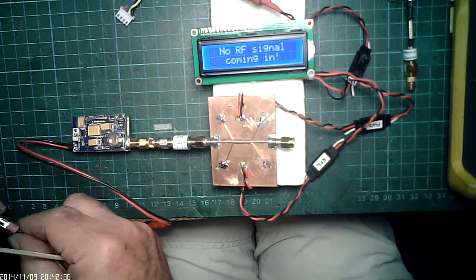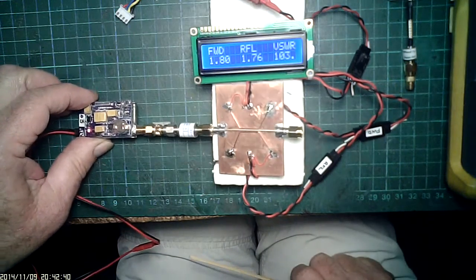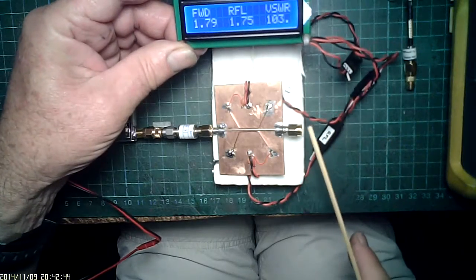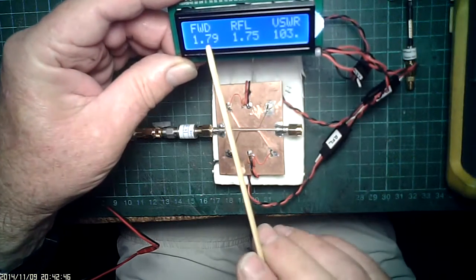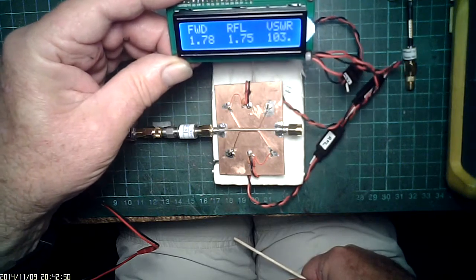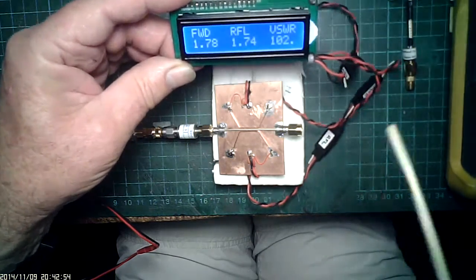Plug in the VTX. Yes we have power, yes we have RF, and then we have an open circuit here. Our forward voltage and our reflected voltage are almost identical, which is correct by the way.